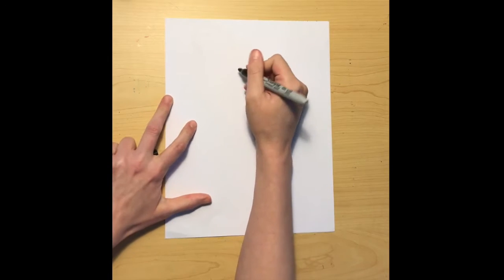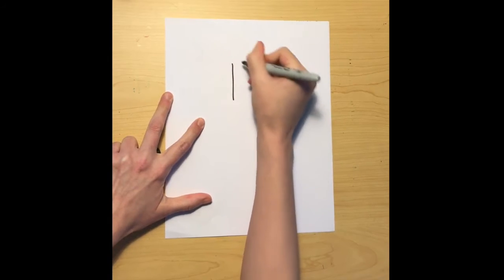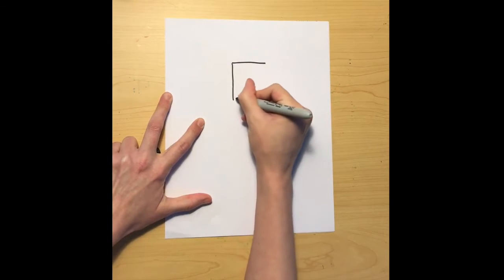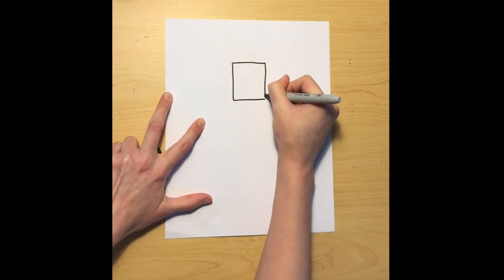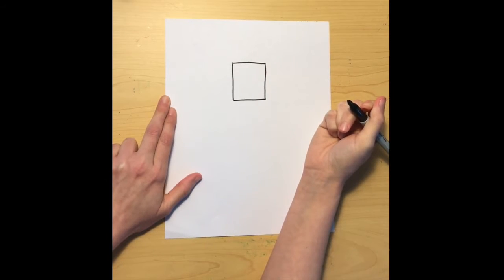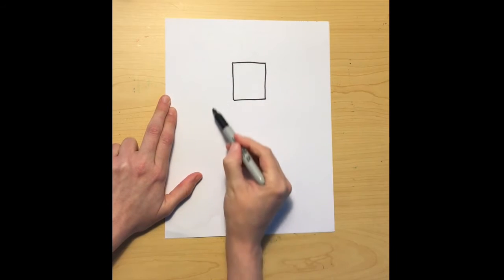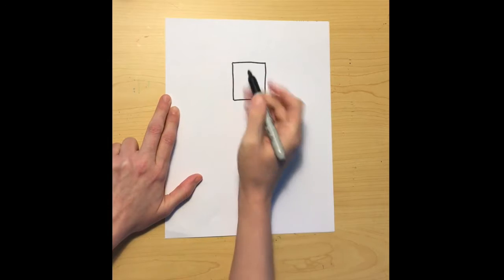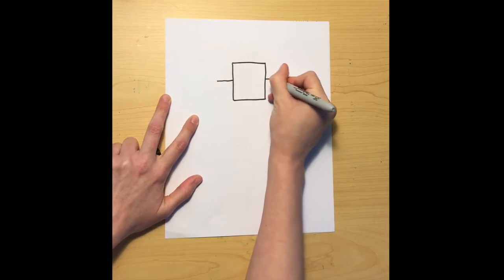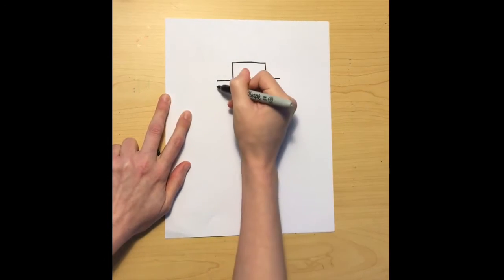We're drawing a square cow first, so I'm going to start by putting a square kind of towards the top of my page, leaving room for the body and the legs. Right there, off the side of the square face.